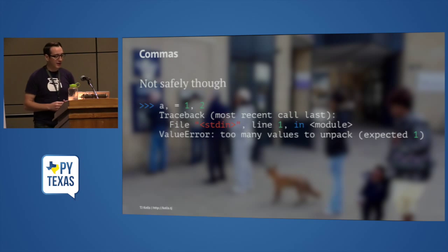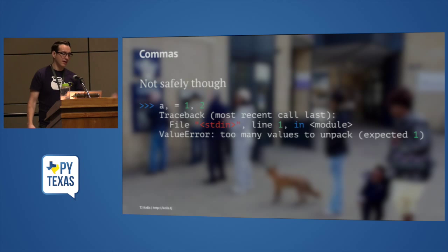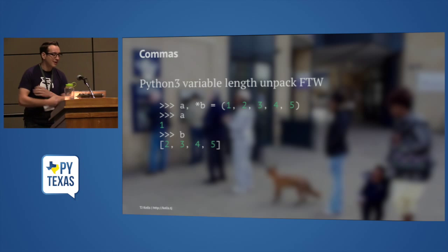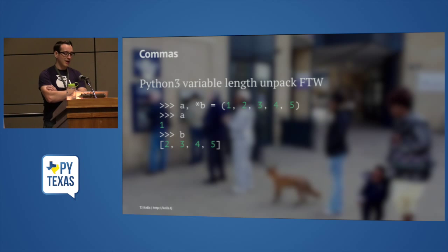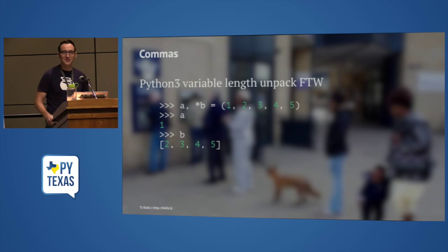Python 2, unfortunately, has unsafe variable unpacking. If I have more values on the right-hand side than names on the left-hand side, I get a value error. Python 3 fixes this — I can do a, comma, star b, and I end up with a equals the first value and b refers to the rest. Another reason to use Python 3.